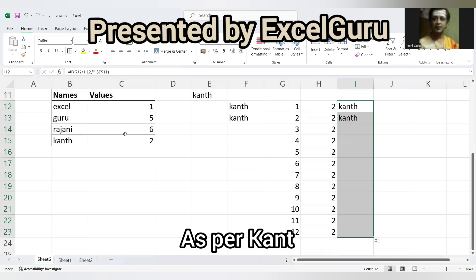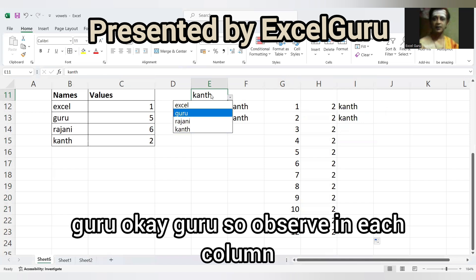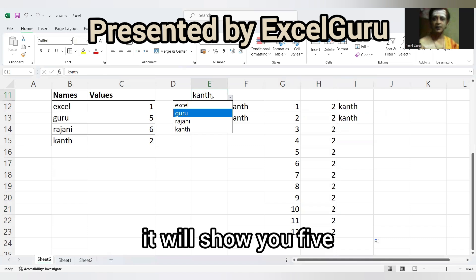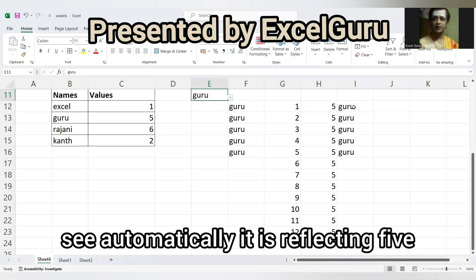So what I'll do, I'll change here to Guru. So observe in H column it will show you five. See, automatically it is reflecting five.